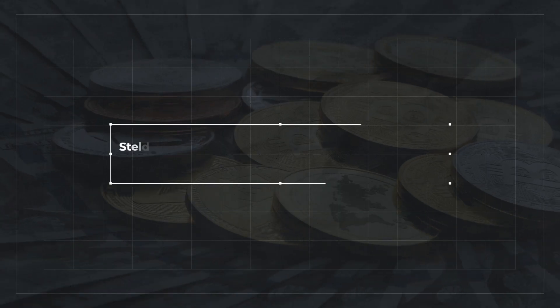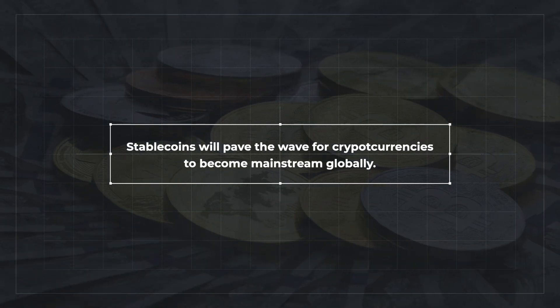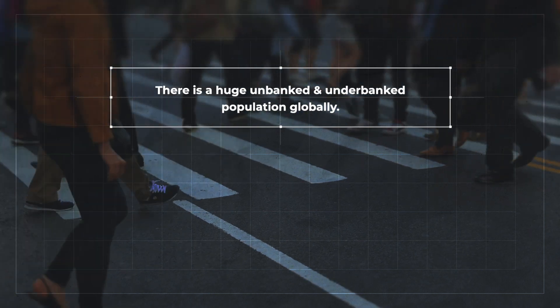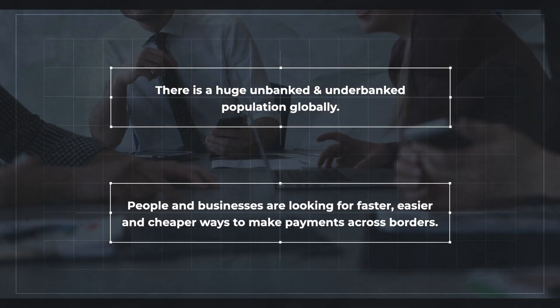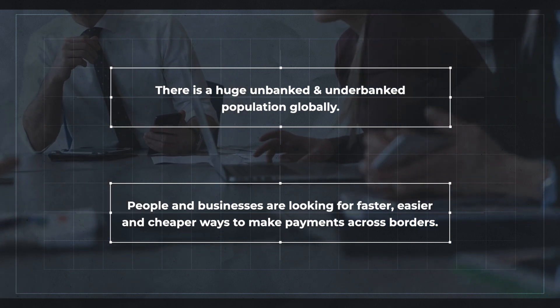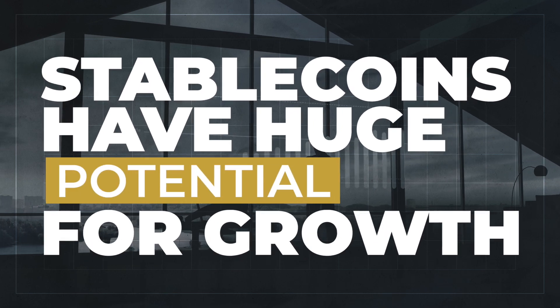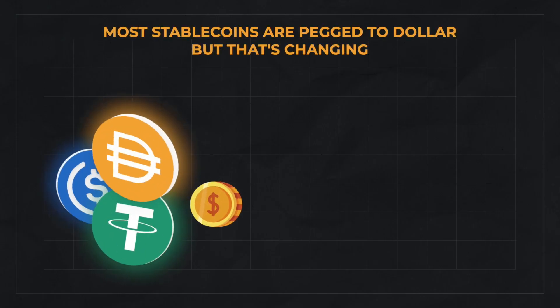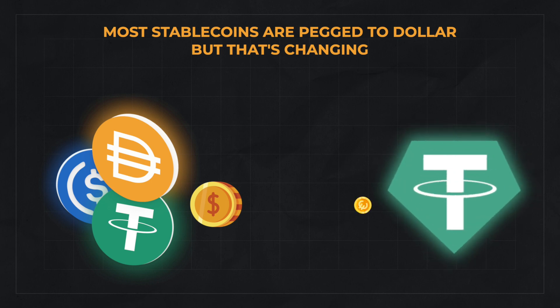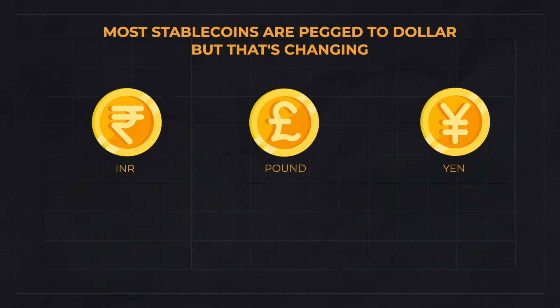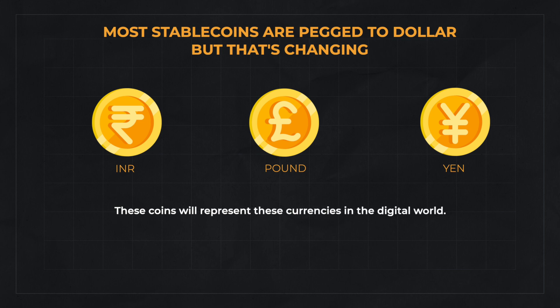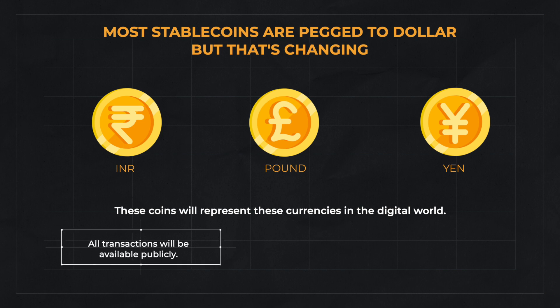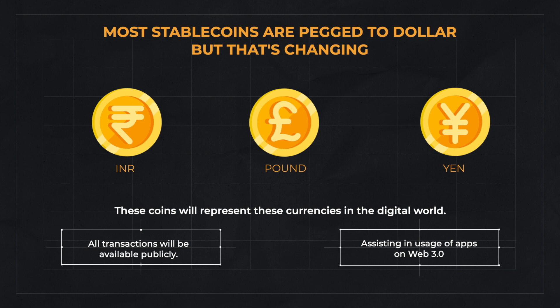We've now discussed the three different types of stablecoins. Over the last few months, the supply of stablecoins has increased exponentially, and there is a strong expectation that stablecoins will pave the way for cryptocurrencies to go mainstream. Moreover, with a huge unbanked and underbanked population globally and people looking for faster, easier, and cheaper ways of sending payments across borders, stablecoins have huge potential for growth. Most stablecoins today are pegged to the dollar, but recently Tether launched Euro Tether, pegged to the euro, and we will surely see INR, Pound, and Yen-pegged stablecoins very soon.